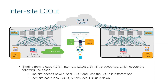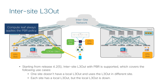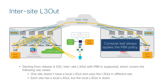Starting from release 4.2.5, inter-site L3 out with PBR is supported. For example, one site may not have a local L3 out and uses the L3 out in a different site, or both sites have local L3 outs but one of them is down. Regardless of where external traffic comes from, the compute leaf applies PBR policy and the local PBR destination is used.